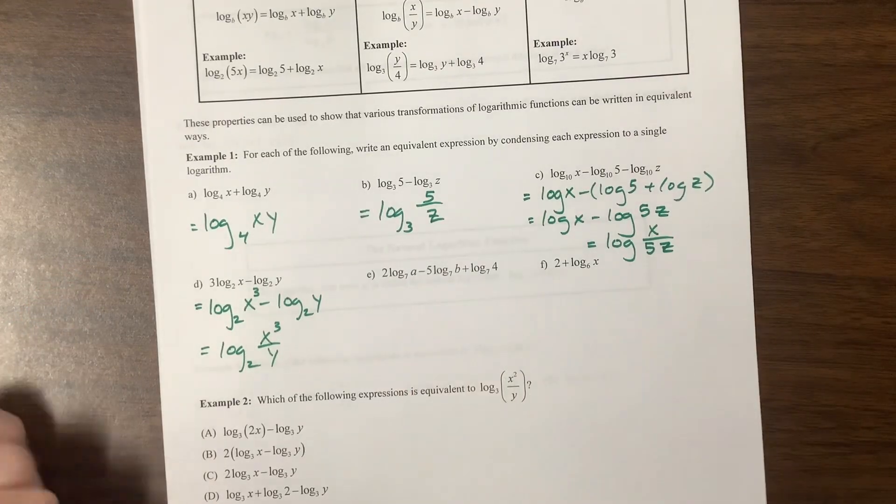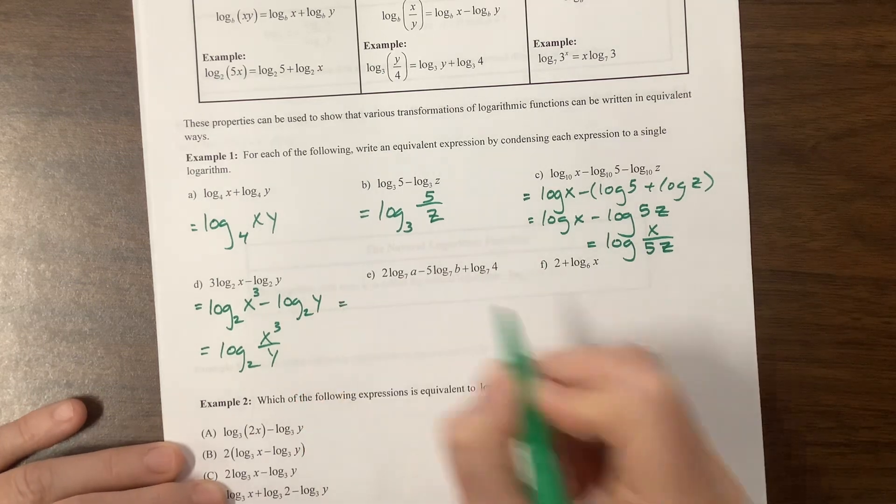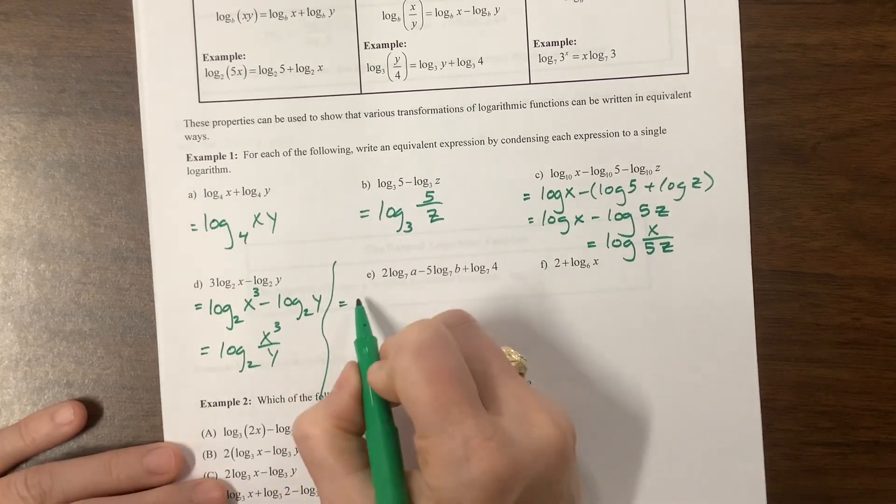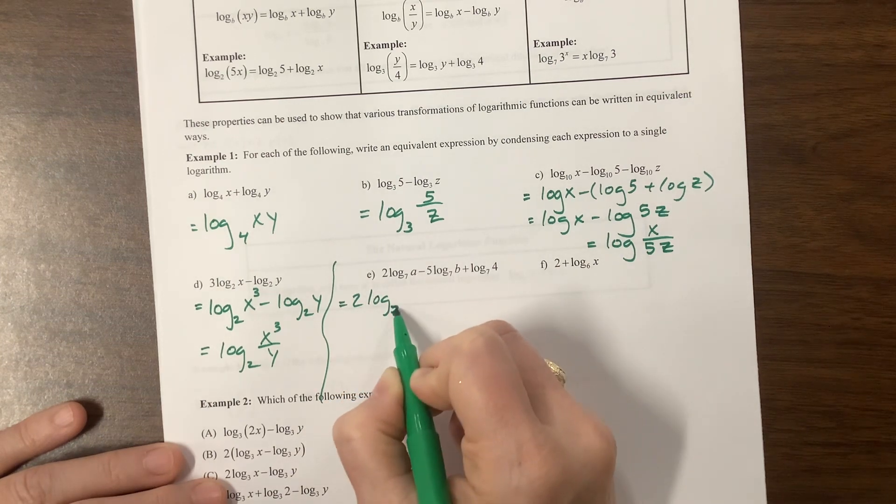This one, so the positive stays on the top and the negative goes to the bottom. You can see a little more clearly if I rewrite this to log base 7 of, oh, I started to write my a too soon. 7 of a plus log base 7 of 4 minus 5 log base 7 of b.